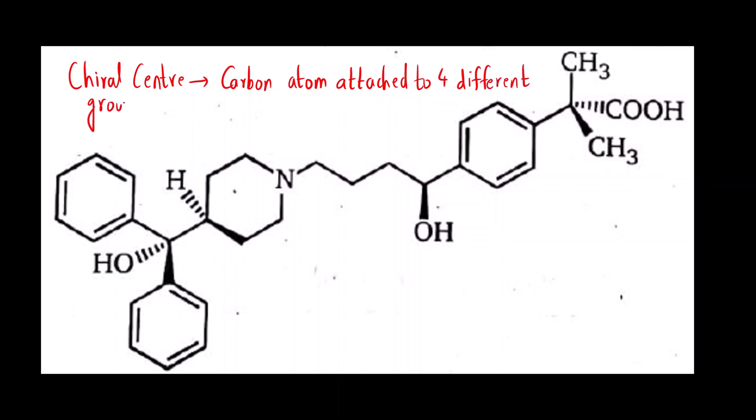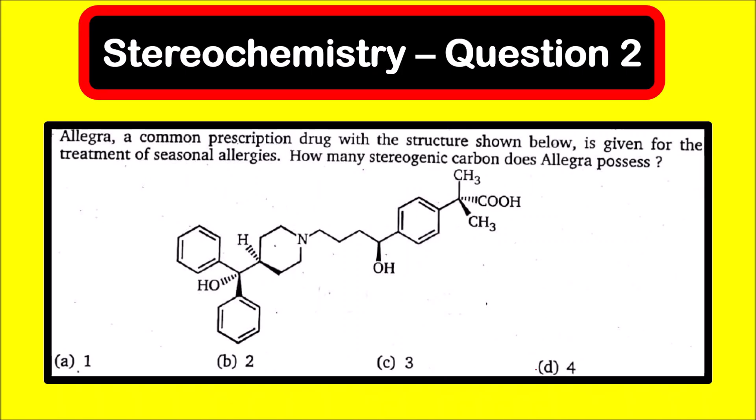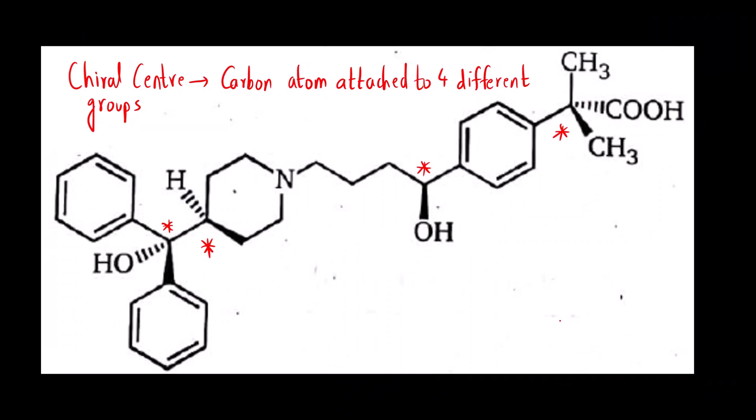Now, by looking at the stereochemistry, suppose you mark this is chiral, this is chiral, this is chiral and this is chiral. Suppose you mark the answer as 4, that is option D, just by looking at the stereochemistry. Then your answer will be incorrect. This is not the correct answer. Let us see how.